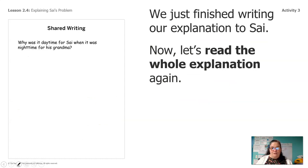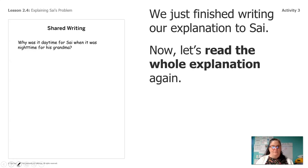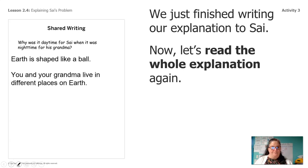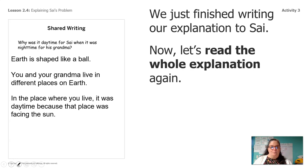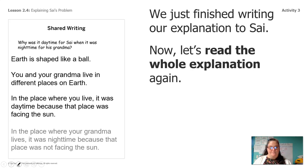Now we're going to put all those parts together and read the whole explanation. Ready? The earth is shaped like a ball. You and your grandma live in different places on earth. In the place where you live, it was daytime because that place was facing the sun. In the place where your grandma lives, it was nighttime because that place was not facing the sun.